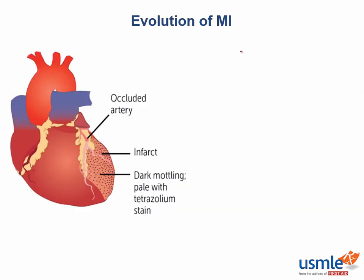Let's look at the features of an MI visible in the first 4 to 24 hours. Your step 1 exam will describe histopathologic changes or provide an image of the microscopy slide, and you have to identify the time frame. The gross features are not the highest yield — you can derive them if you know what is going on at the extremely high yield microscopic level.